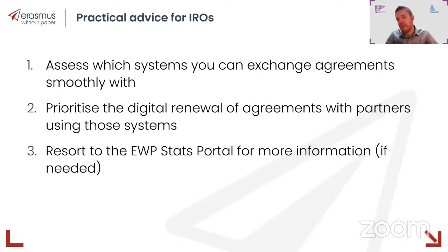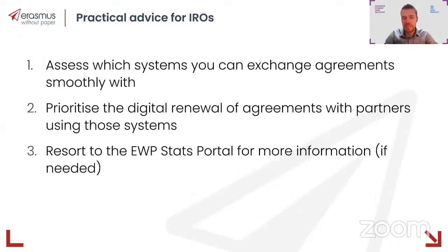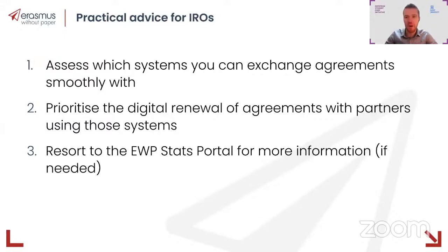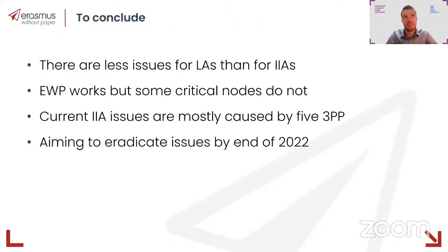Beginning of 2023 while preparing the call for mobilities in the next academic year, you can use the EWP Stats Portal to find out what system is in use at which institution. There is a completely new approach when it comes to setting new targets. It is very important that the technical specifications are combined with mandatory business requirements. We also think it would be good to have an implementation threshold, and we are putting in place some robust testing mechanisms, followed by a decision by the Commission after consultation with the governance bodies where the community is represented.